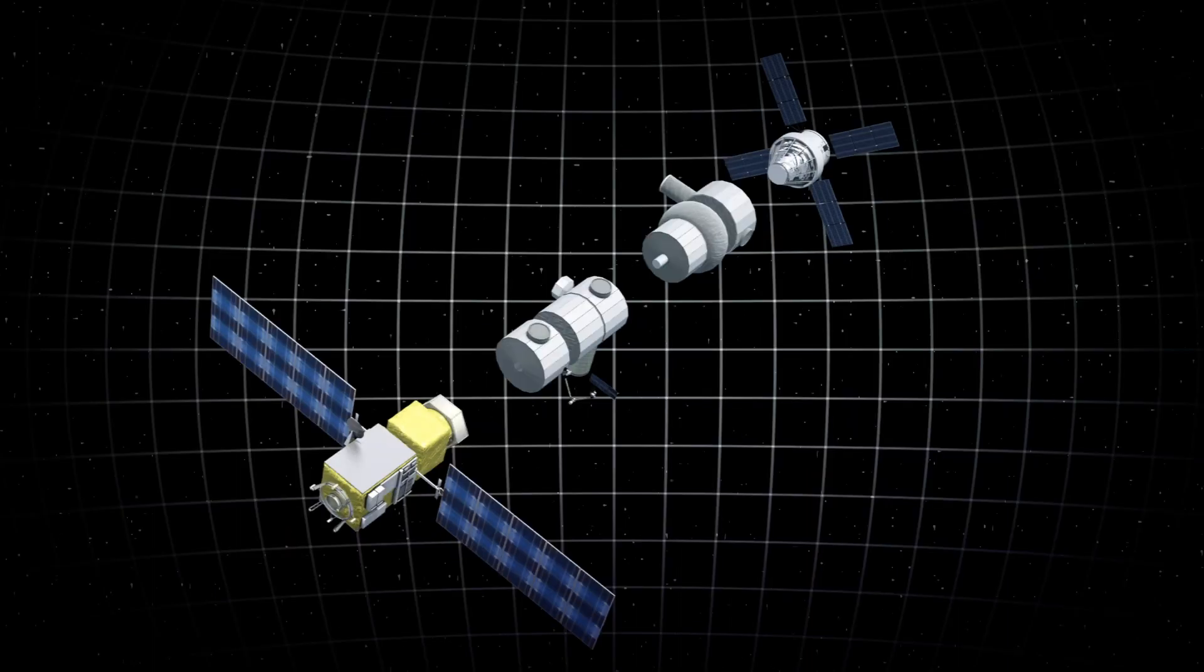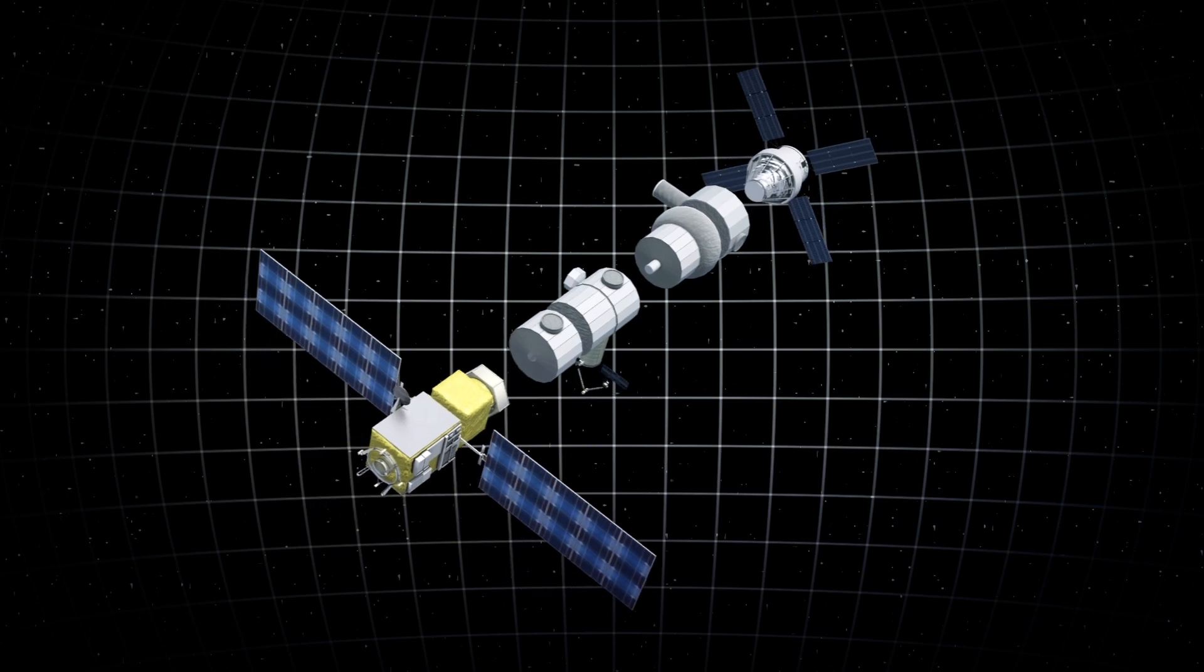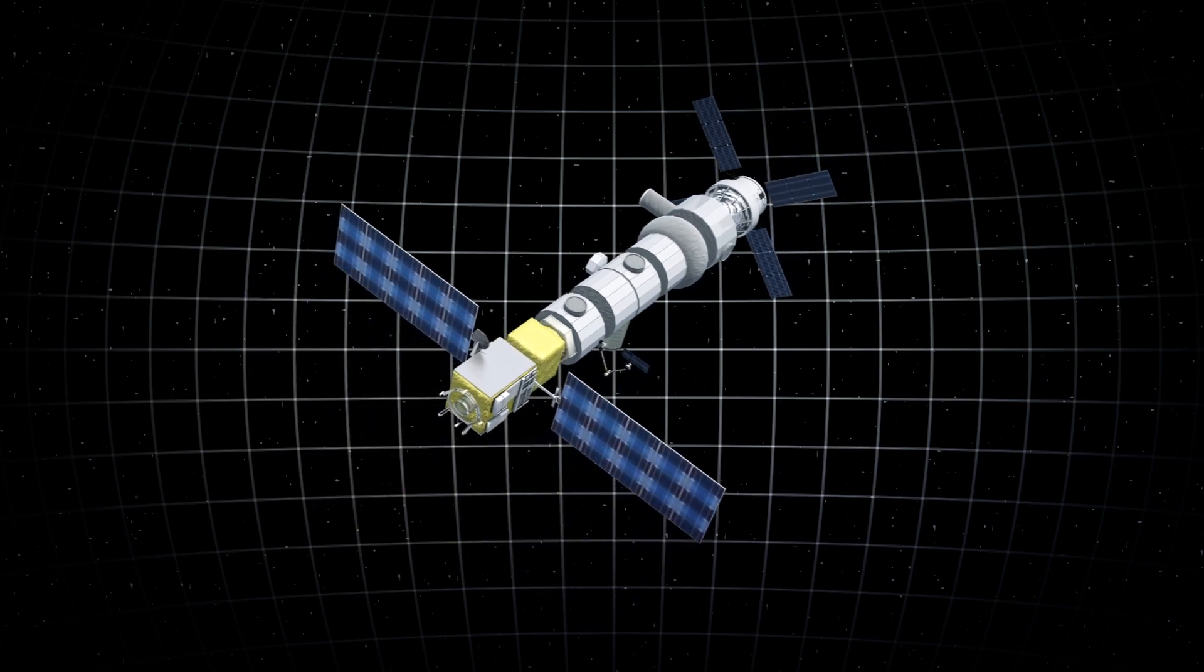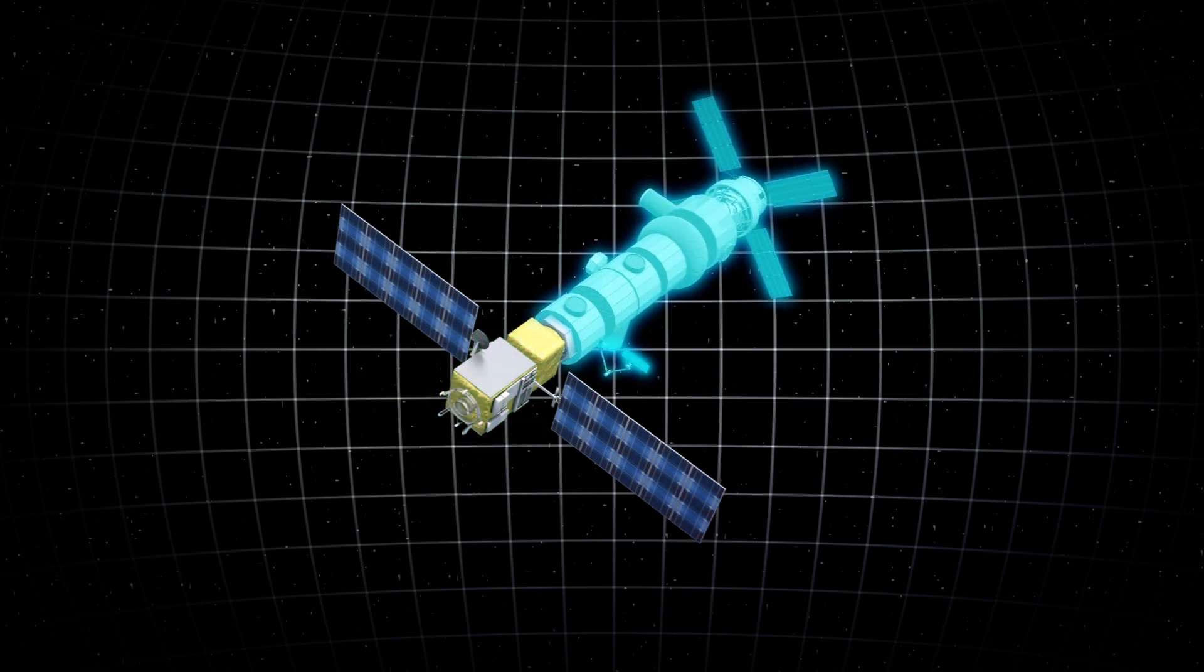Around the same time, NASA will be sending parts of a lunar orbital station named the Gateway to the moon via private companies. The Gateway will consist of a power and propulsion element and a small habitat module.